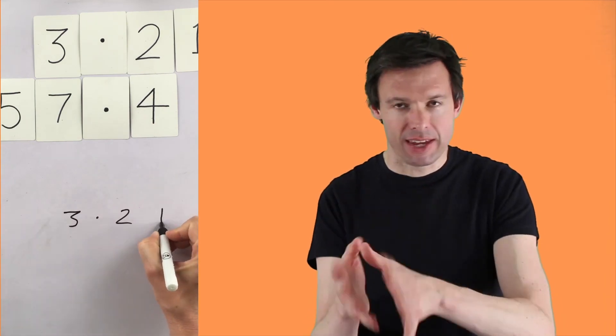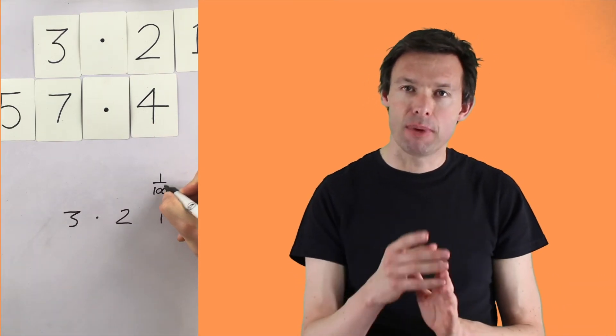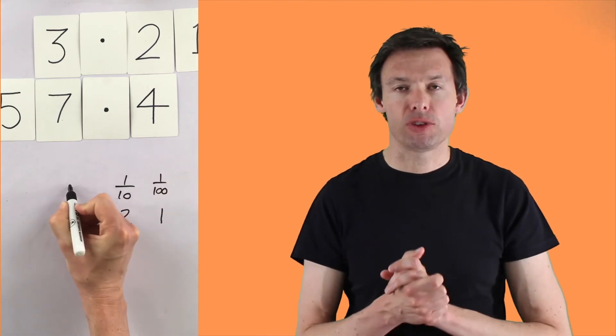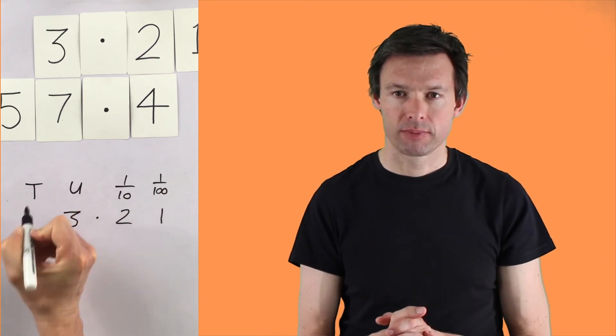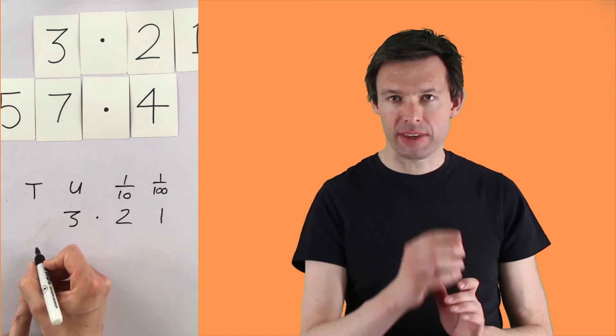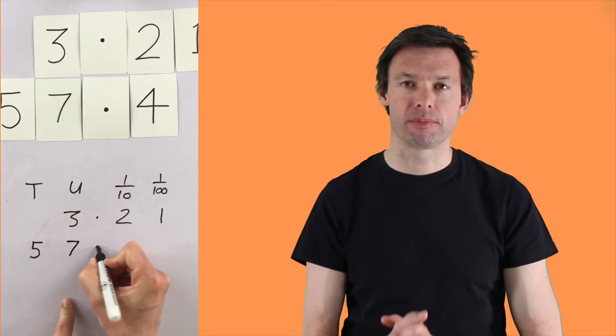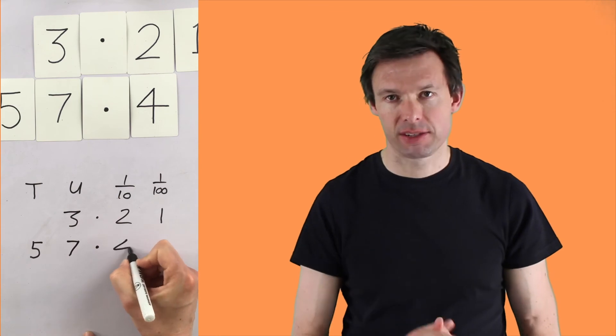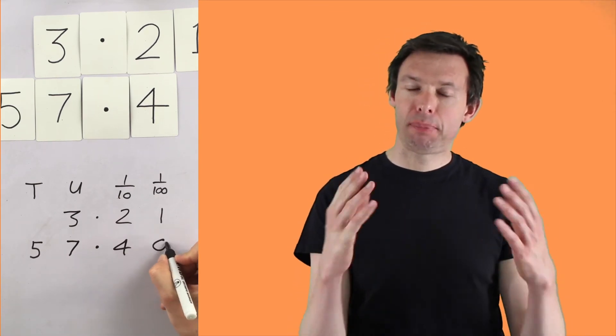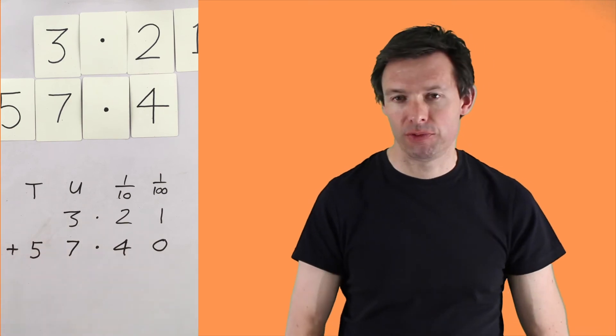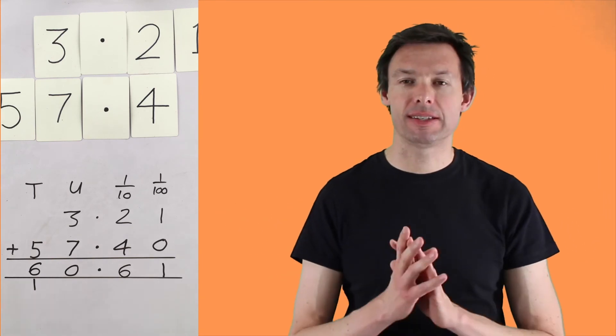Now when you're adding decimals, you've got to be really careful you line the digits up correctly. So the first thing is, you've got to make sure those decimal points are aligned. And also that the tens with the tens, the ones with the ones, the tenths with the tenths, the hundredths with the hundredths. So our first number, 3.21, has 1 hundredth, 2 tenths, and 3 ones. But we're also going to need the tens column here, because when we add the number 57.4, the 5 has to go in the tens column, the 7 has to go in the ones column, and the 4 has to go in the tenths column. We can also add a place value holder if we want to, to show that there's no hundreds if we find that easier. But then we add it up exactly like before, using exactly the same algorithm, it's exactly the same thing.